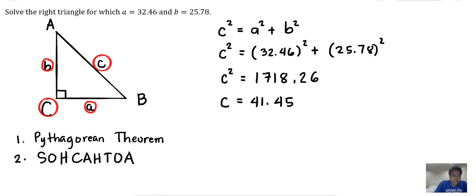The remaining unknowns are angles A and B. To solve for angle A, we look at the involved sides. Given that angle A is our unknown angle, we identify which sides are involved.